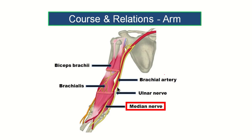Starting from the originating point of the median nerve, we can first see that the median nerve lies laterally — this is the lateral position of the median nerve relative to the brachial artery. Then, going down, we can see this point is directly over — that means anterior to — the brachial artery. Finally, the median nerve reaches the medial side. These three points are important: lateral, then anterior, then medial.